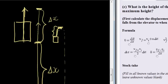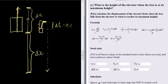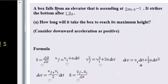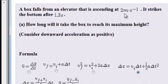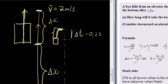One thing we need is the time it took for the box to reach its maximum height, which we worked out in the first question: 0.2 seconds. We also know that the elevator was traveling at a constant velocity. Reading the problem again: a box falls from an elevator that is ascending at 2 meters per second — a constant velocity of 2 meters per second.